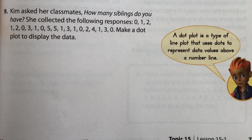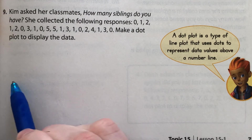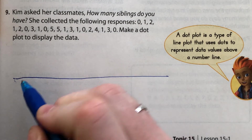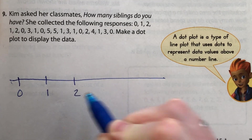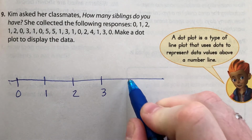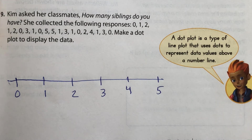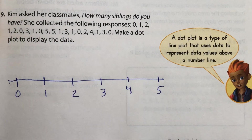I'm going to pause the video. On page 751, I want you to create a dot plot for all of this data. Draw a number line starting at zero and going up to five — since five is the highest number in the data — and create a dot plot based on the information provided.